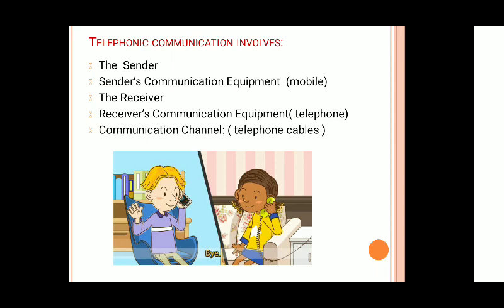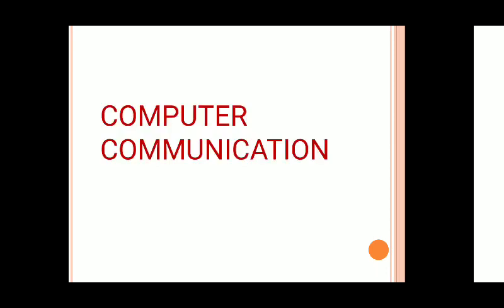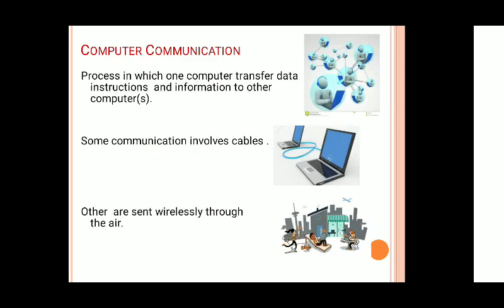What do you understand by computer communication then? Computers were standalone devices when they were first introduced. With the rapid increase in the use of computers, manufacturers began to design hardware and software that would allow computers to communicate with one another. Computer communication can be described as a process in which one computer transfers data, instructions, and information to another computer.